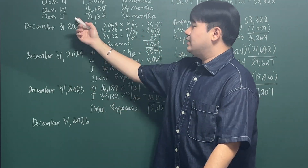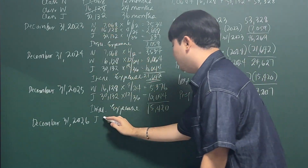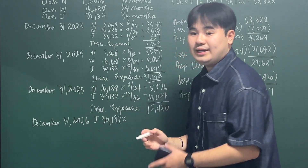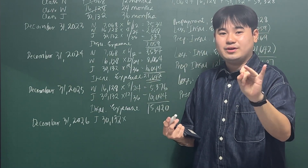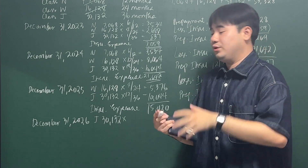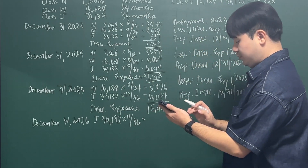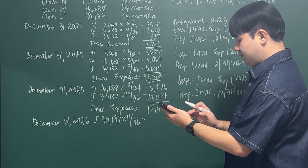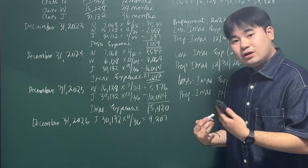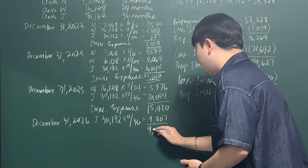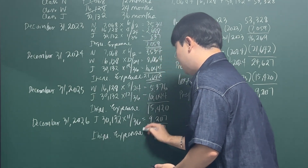For 2026, we're only dealing with Class J, which expires November 30, 2026. Counting January through November is 11 months: 30,132 × 11/36 = 9,207. There are no other insurance policies remaining, so that is the total insurance expense for 2026.